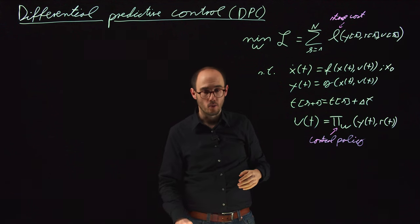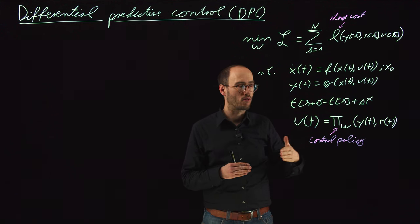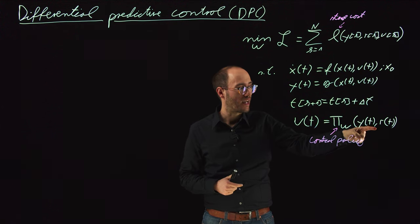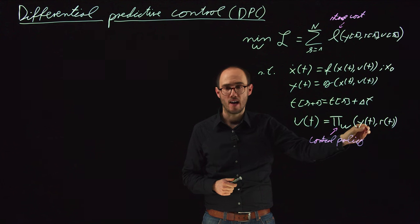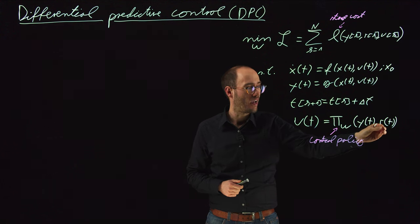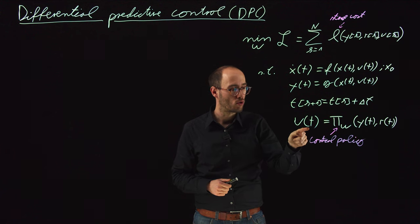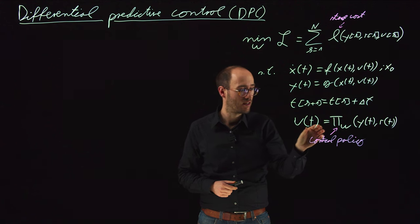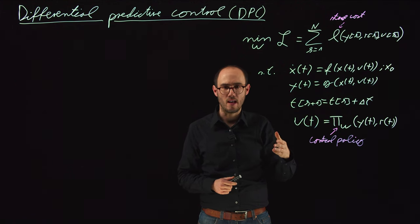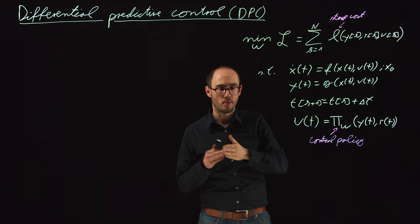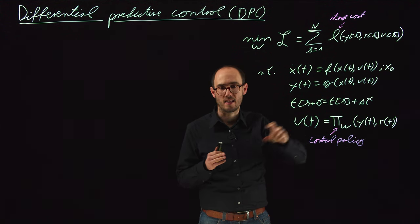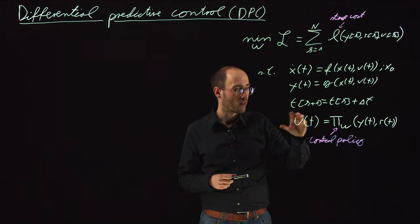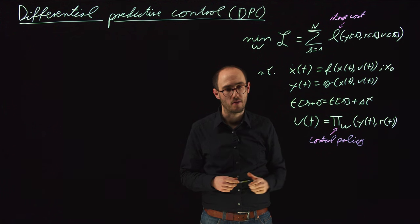This means we do not explicitly predict into the future, but we have a direct relation from our current output observation and current reference observation to a control action — an explicit relation. In model predictive control, this relation was more implicit because we rolled a model into the future and solved over that model prediction, which is not done here because we have this explicit control policy.